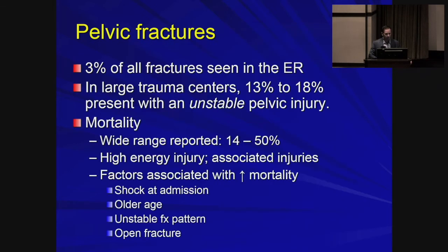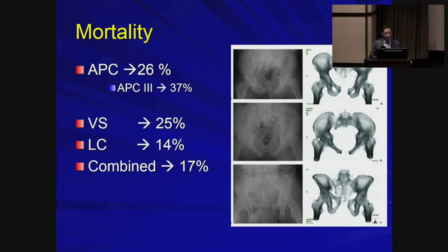A wide range of mortality has been reported, but we know mortality goes up when the patient arrives in shock, is older, or has an unstable fracture pattern. The most deadly subtype is APC3 — when all ligaments have been disrupted in the hemipelvis with complete dissociation and external rotation.